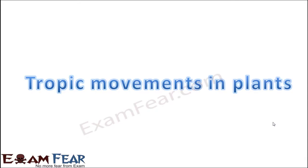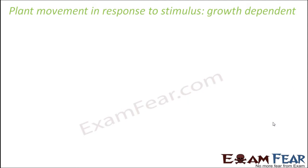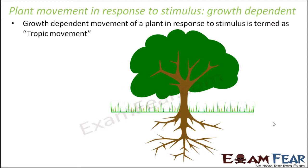Now we will talk about tropic movements in plants. We have already studied what is growth, what is development, different important facts about growth, growth hormones, and photoperiodism which also influences growth because flowering is an aspect of growth. Now we will talk about some movements in plants which are related to growth. Plant movement in response to stimulus — these are growth dependent movements. Growth dependent movement of a plant in response to stimulus is termed as tropic movement.